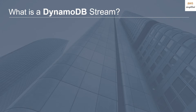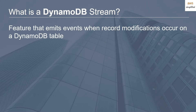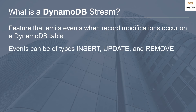So firstly, let's answer: what is a DynamoDB stream? A DynamoDB stream is a feature that emits events when record modifications occur on your DynamoDB table. Basically, anytime something happens to your table — if there's some kind of modification on the underlying data records — an event is going to be fired that captures the change. There are three types of events: insert, update, and remove. You're either adding data, changing data, or deleting data.